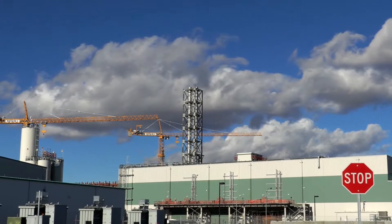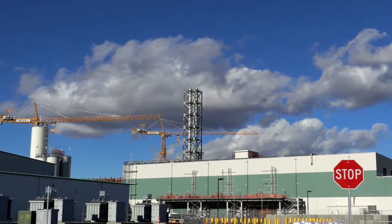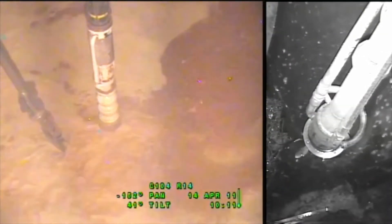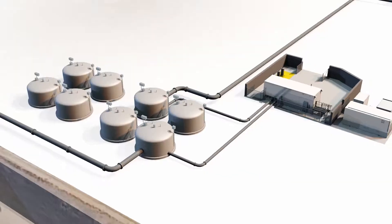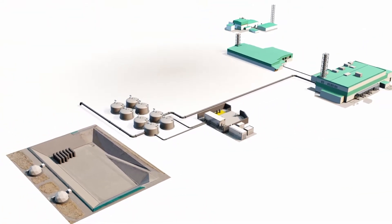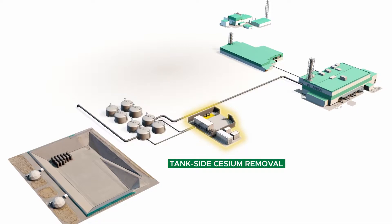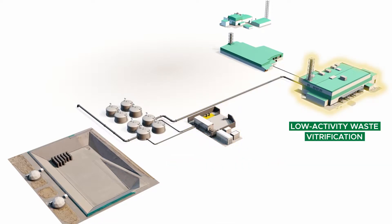The direct feed low activity waste system at Hanford will process radioactive liquid from waste tanks and feed it to a low activity waste melter. The system is designed to filter out any residual solids and remove highly radioactive cesium from the liquid waste or supernatant before it is fed to a melter at the waste treatment and immobilization plant.